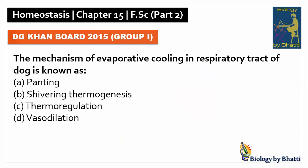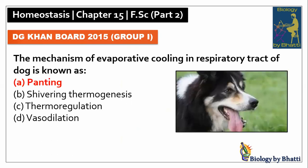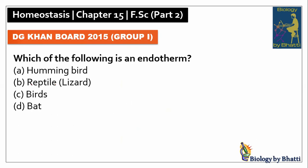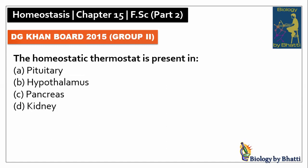DG Khan Board 2015 Group 1: the mechanism of evaporative cooling in the respiratory tract of a dog is known as panting, A option. In the same paper, which of the following is an endotherm — birds are endotherms, the answer was C option.